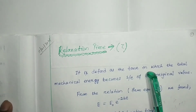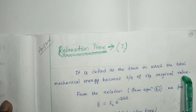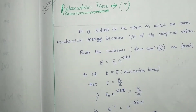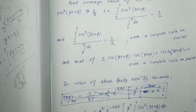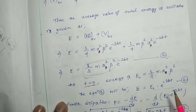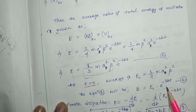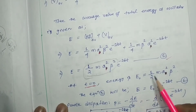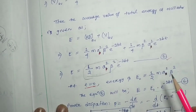Relaxation time is defined as the time in which the total mechanical energy becomes 1/e of its original value. Considering equation number 6 from the previous lecture, we found that it tells us the instantaneous energy at a particular time. When t equals 0, the maximum energy is E₀, which is (1/2)mA²ω², the average maximum energy — that is average kinetic energy plus average potential energy.